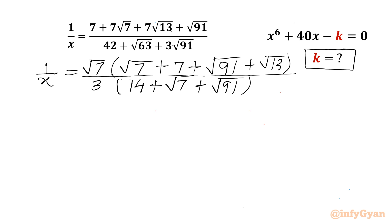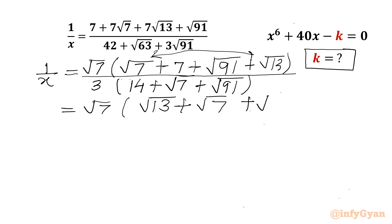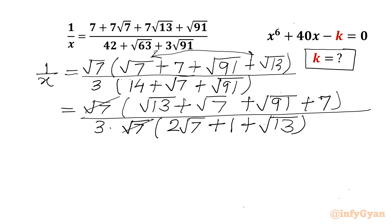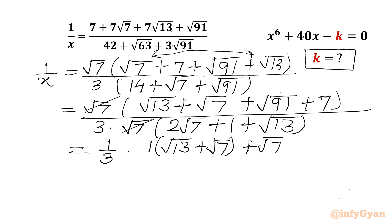Now I will write the first and last terms together. So I can write root 7 in the bracket: root 13 plus root 7. Then we can write root 91 plus 7 over 3 times. Let us take root 7 common from the denominator also. So I will write here: 2 root 7 plus 1 plus root 13. Now root 7 and root 7 we can cancel. So I will write 1 over 3 times. Let us take 1 common — so in bracket: root 13 plus root 7. From the last 2 I will take root 7 common, so in bracket: root 13 plus root 7 over.